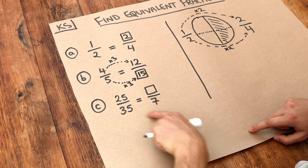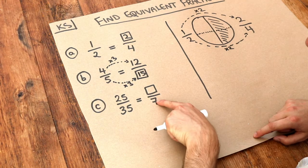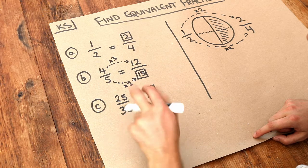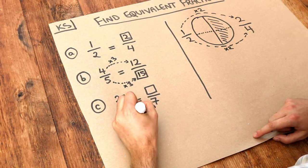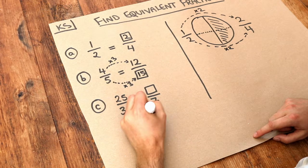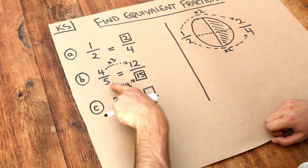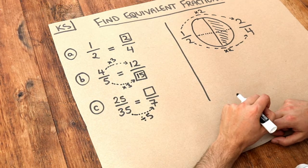What about the last one? Twenty-five thirty-fifths is the same as what sevenths. We can see to get from seven to thirty-five going backwards we've multiplied by five. Or equivalently we could go this way forwards - we could say that we've divided the number by five. For equivalent fractions we can either times both top and bottom by the same number or divide the top and bottom by the same number.